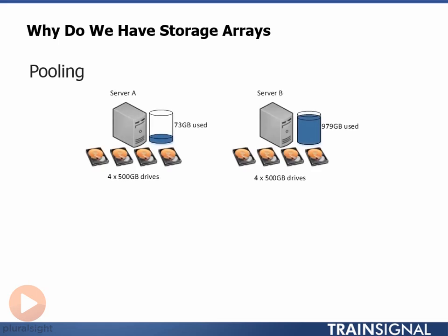We show this in the slide. Server A on the left has 1TB of direct attached storage — we shorten that to DAS — but it's only actually using 73GB of that. Whereas Server B on the right also has 1TB of DAS storage, but Server B is using 979GB and would dearly love some of that spare capacity that Server A has. In traditional DAS approaches, this sharing of capacity is not viable and we end up with capacity islands, where free capacity that could be used elsewhere is stranded and effectively wasted. Server A has 927GB of storage it's not using but can't share with Server B.